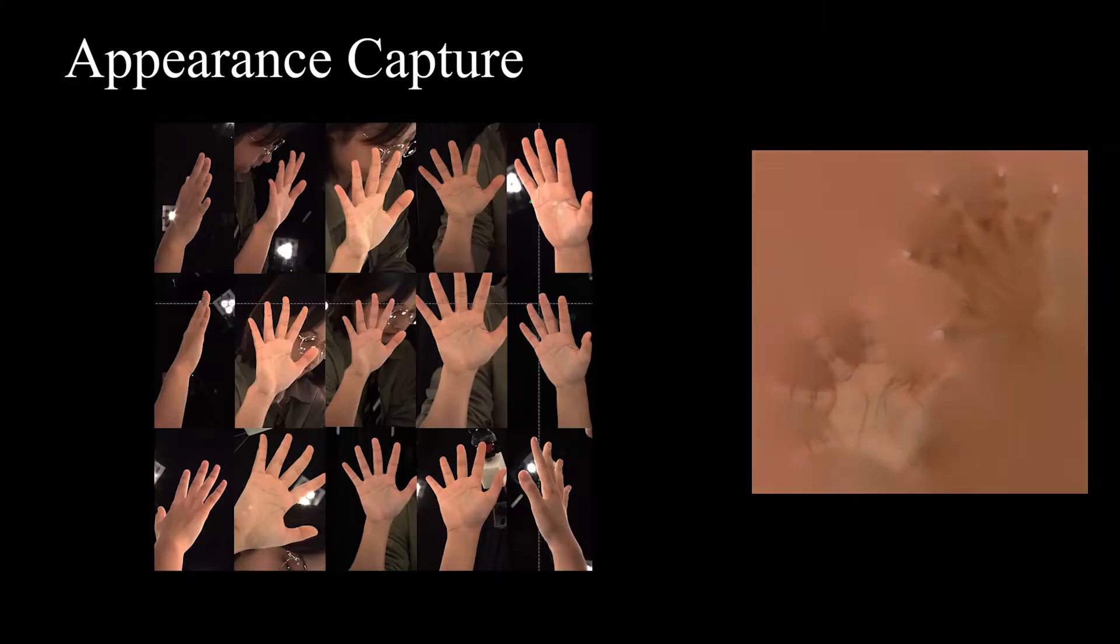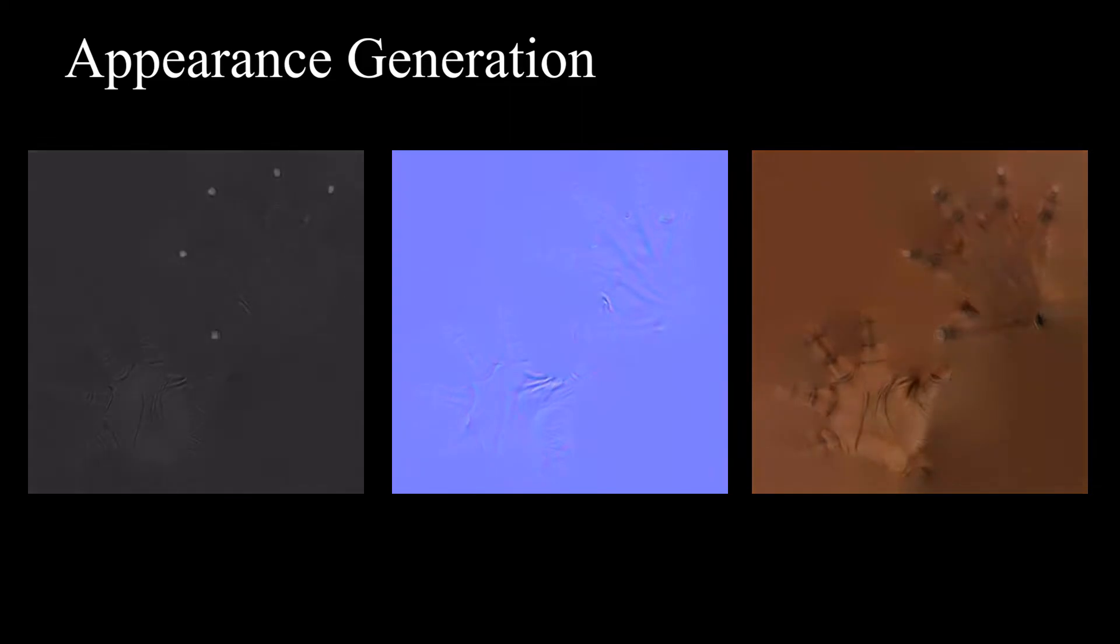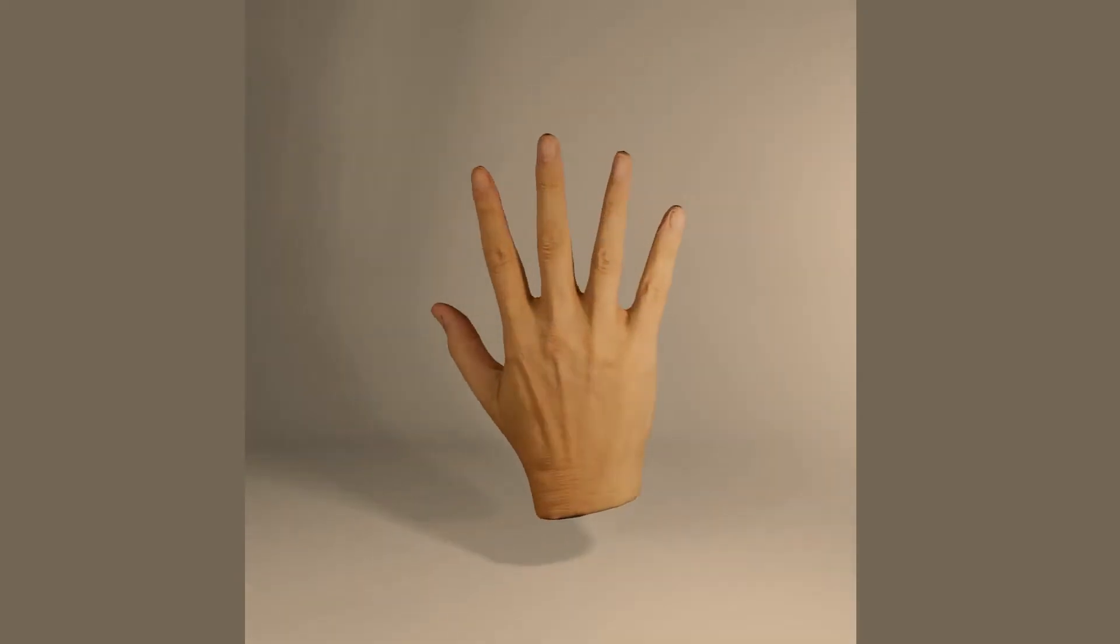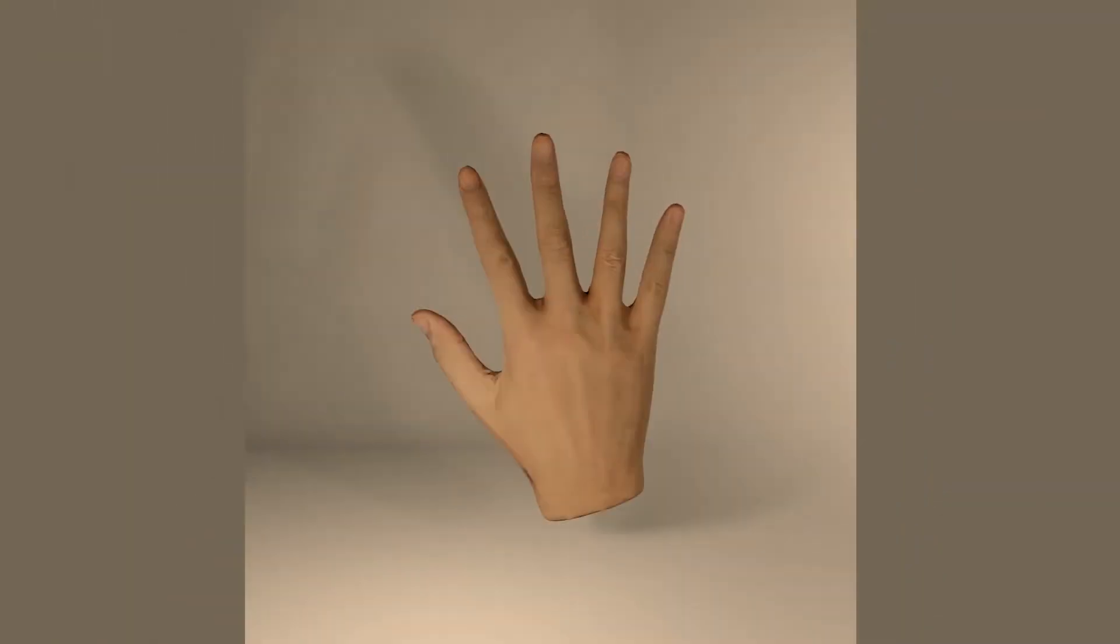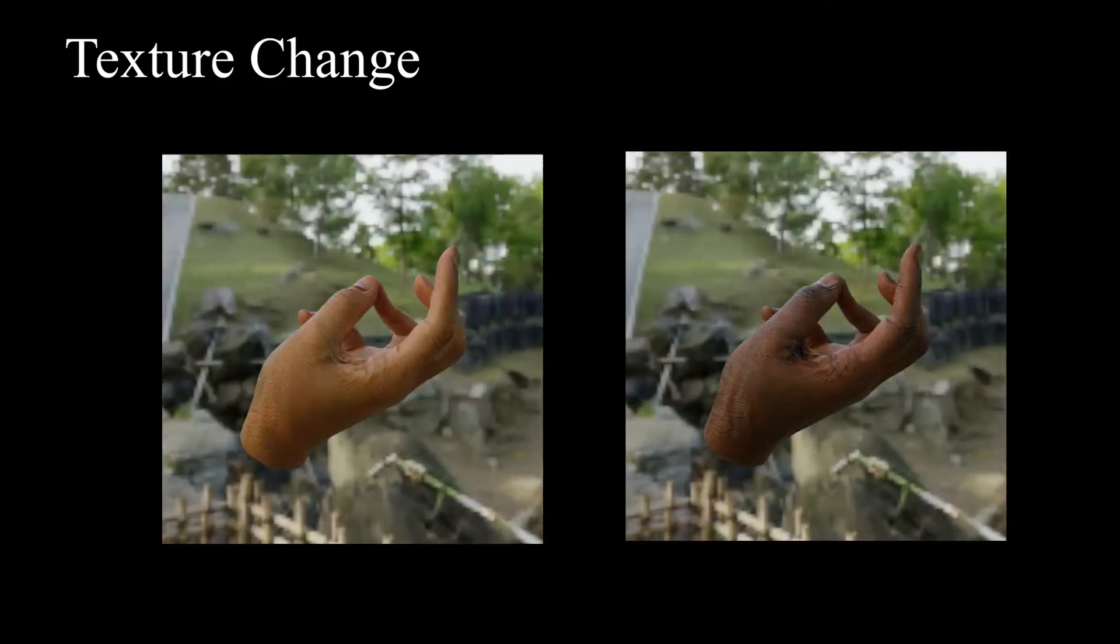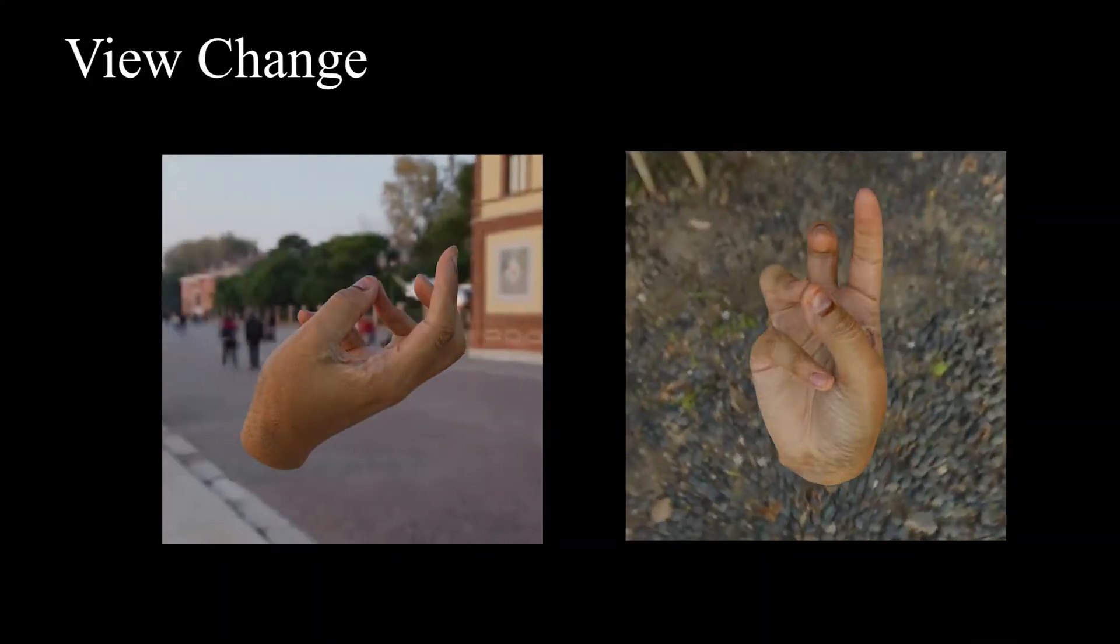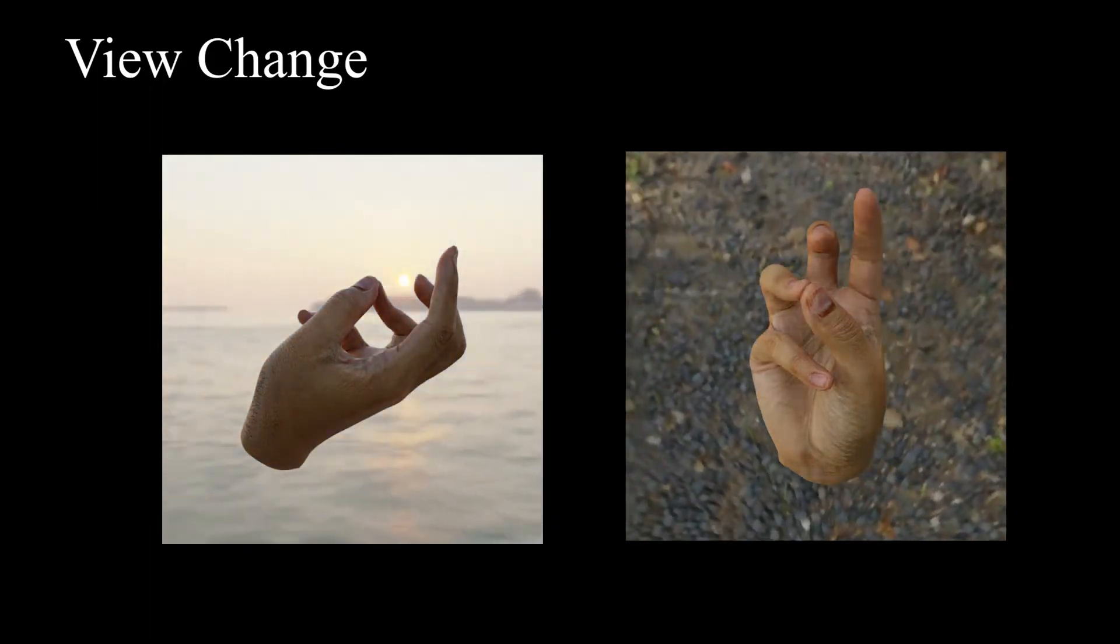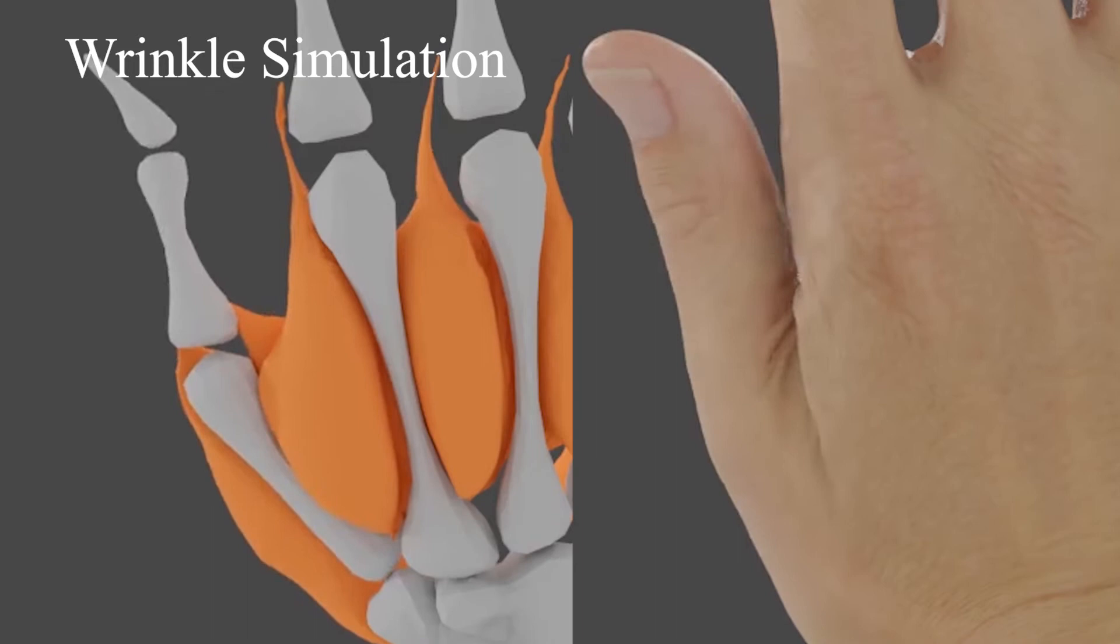To further enhance visual realism, we construct a photometric appearance capture system called Hand Stage to acquire high quality textures with appearance details including wrinkles and palm print. Here we show randomly generated textures. We employ image-based lighting with high dynamic range images as background texture to illuminate the hand. To further enhance our rendering quality, we generate skin wrinkles with cloth simulation.